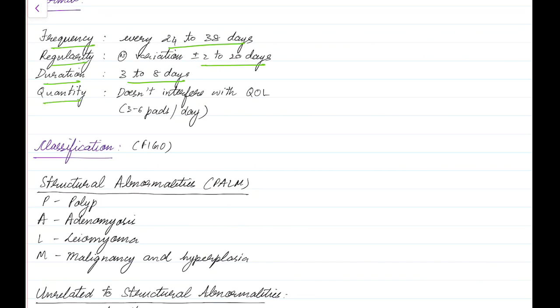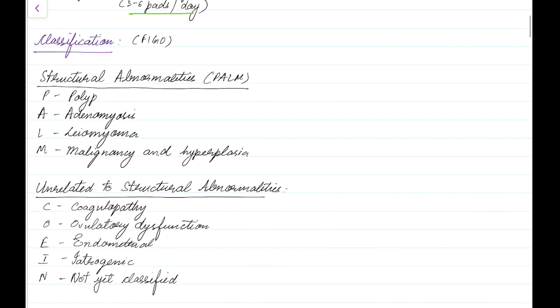Coming to the quantity, the quantity should not interfere with the quality of life of the woman — that is, the quantity of menstrual flow should not affect the woman so much that her quality of life is affected. Usually the woman soaks around 3 to 6 pads per day normally. Now let us see about the classification of abnormal uterine bleeding according to FIGO.